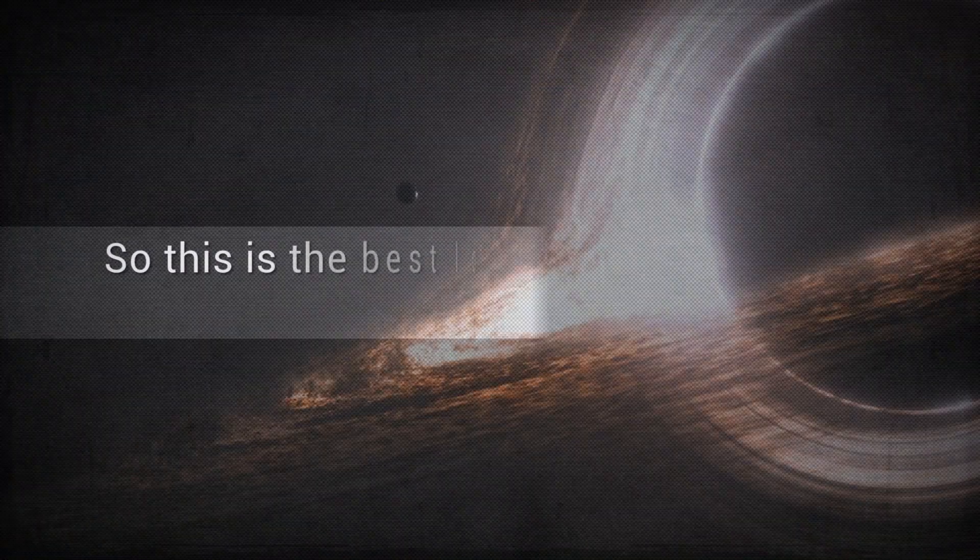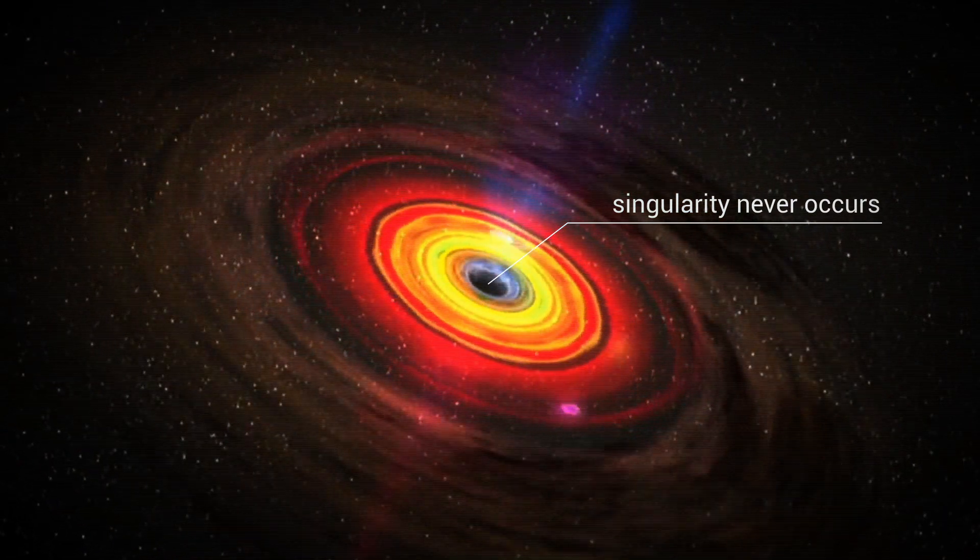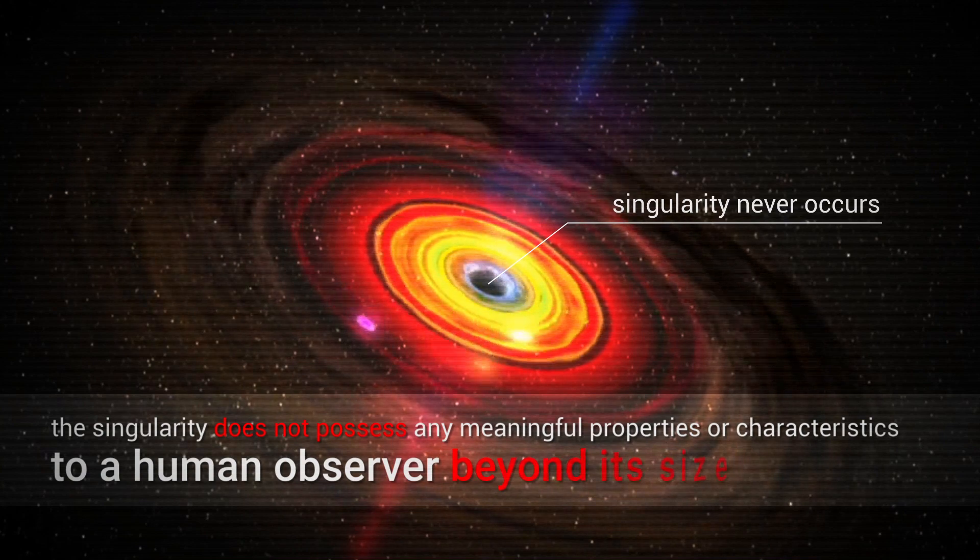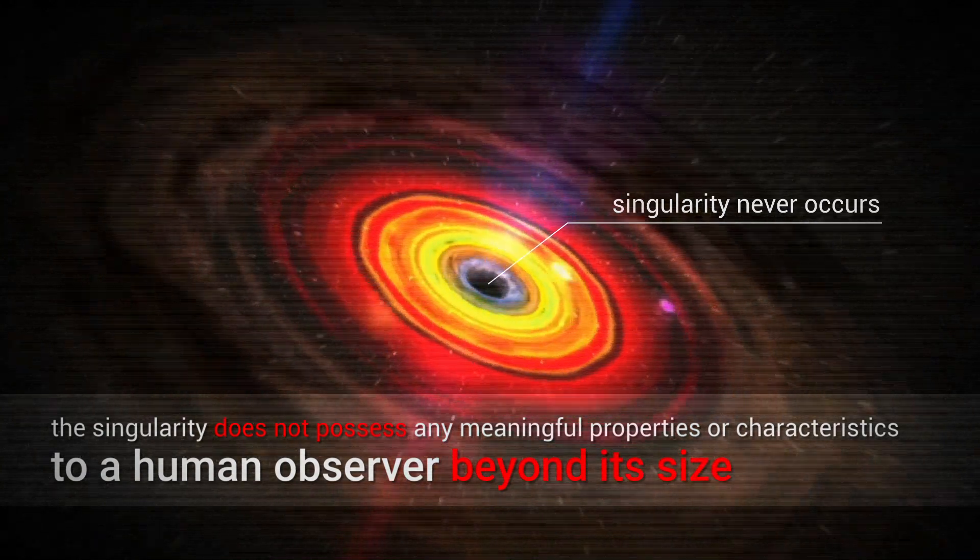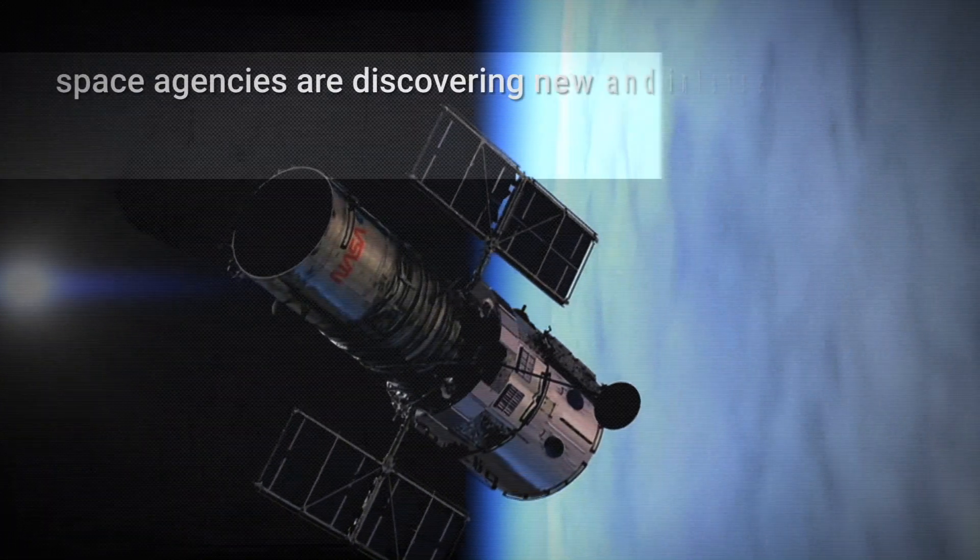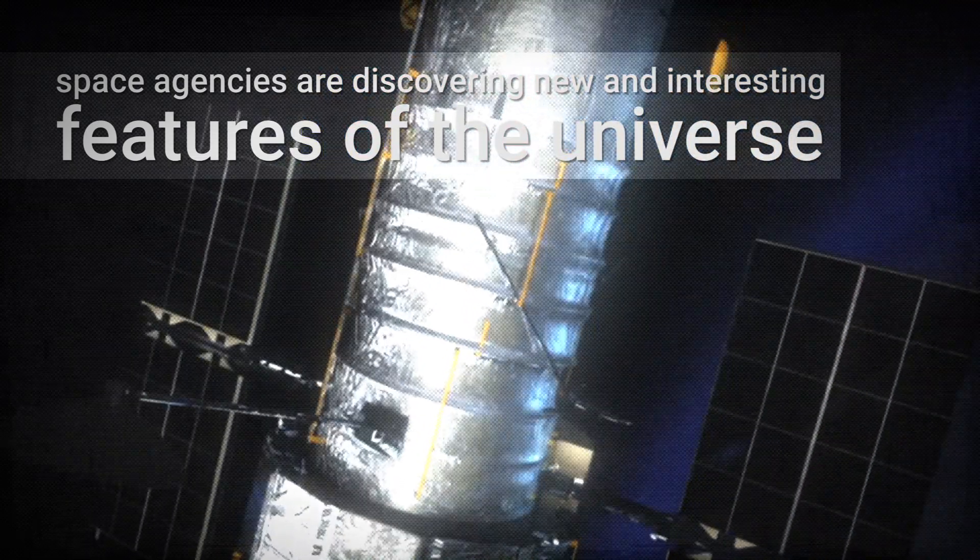Nothing occurs beyond the event horizon. So this is the best look at what the inside of a black hole looks like. The truth is, from the outside, the singularity never occurs. And from the inside, the singularity does not possess any meaningful properties or characteristics to a human observer beyond its size. Although there is no meaningful answer to what the inside of a black hole looks like, every year space agencies around the world are discovering new and interesting features of the universe, and answering our questions in more detail.